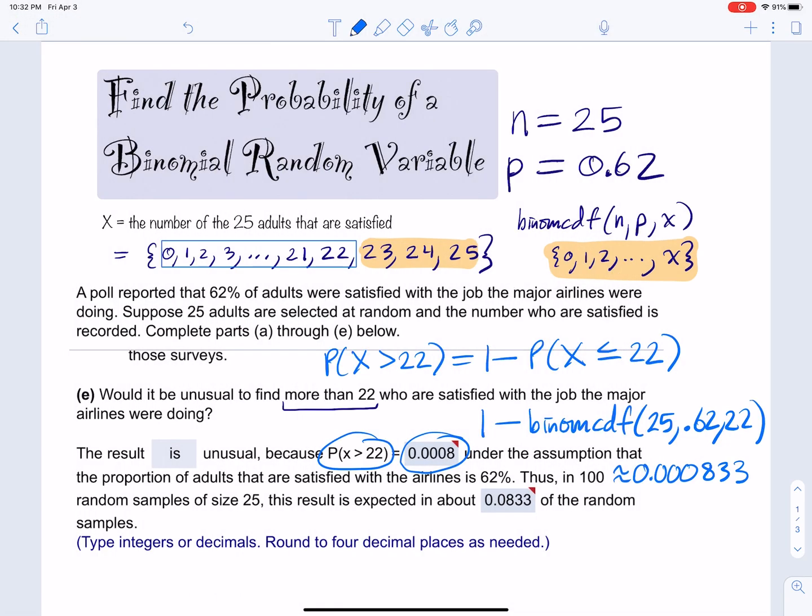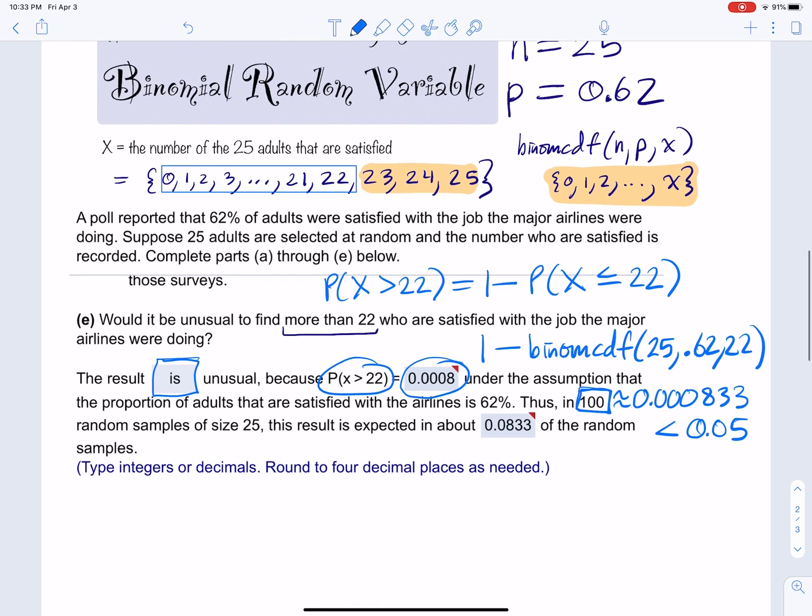So the result is unusual because that probability is less than 0.05. Now, if we did this 100 times in 100 random samples of 25 adults, this result is expected about 0.0833. Just multiply this by 100, because this is the probability that it will happen once.